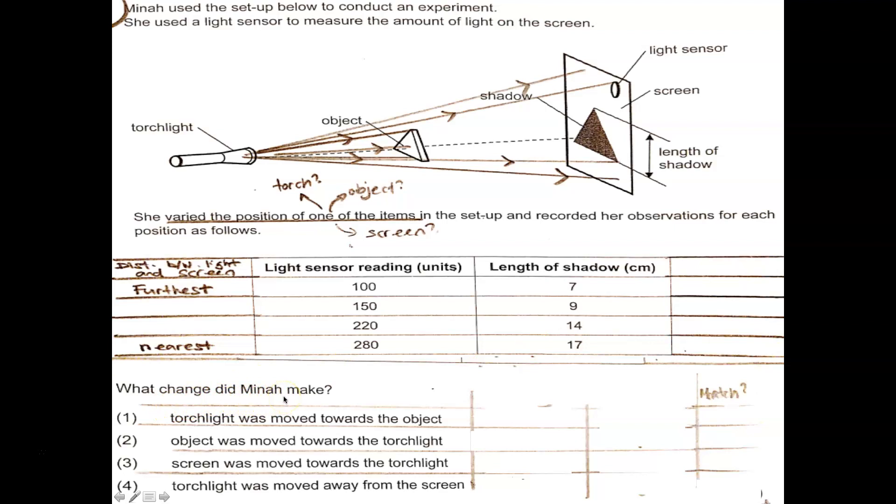Now I'll pause for a moment to just show you. Notice that I have drawn lines to turn into a table, including for the options below. This is to help me to look at my information much more easily. So what change did she make? Now I'll put in the data here. Light sensor reading heading, as well as the length of the shadow. And look at each of these options in turn. And see if it makes sense and does it match what the data says.